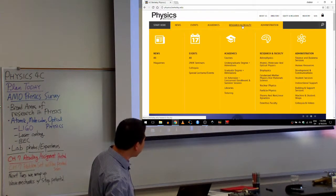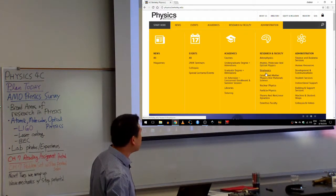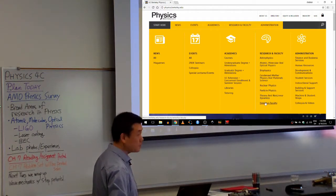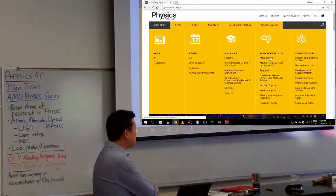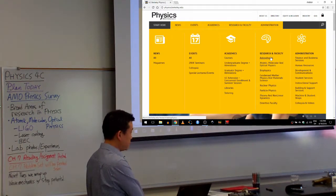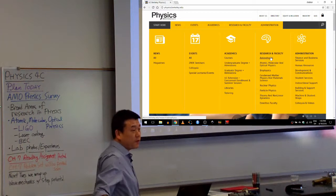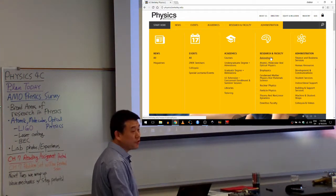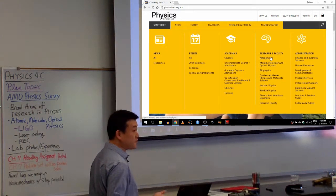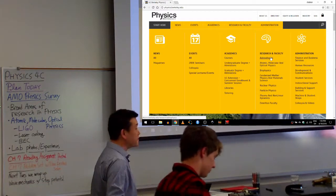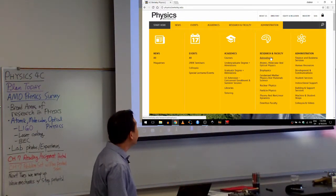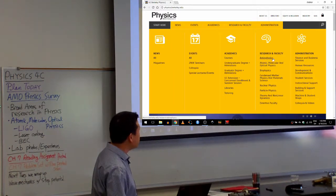So under research and faculty, these are broad outlines of areas of research that people do. Some of them are not exactly physics proper. Astrophysics, that's obviously astronomy, but astronomy is very closely aligned with physics, especially at undergraduate level. If any of you are interested in studying astronomy, what you should have been doing is preparing like a physics transfer student. Then when you transfer, you'd be ready to take all the astrophysics classes. You could consider astrophysics a branch of physics if you want.